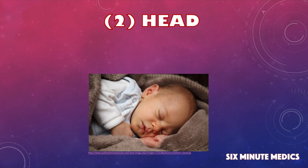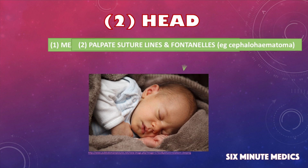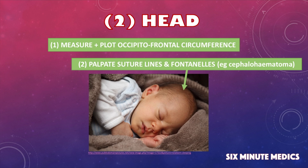Going on to the physical examination, we will start at the head. Have a look at the shape of the head and whether there is anything obviously unusual. Have a feel of suture lines and fontanelles, and use this as an opportunity to measure their occipital frontal circumference, taking the biggest of three readings.